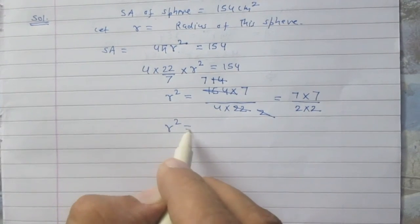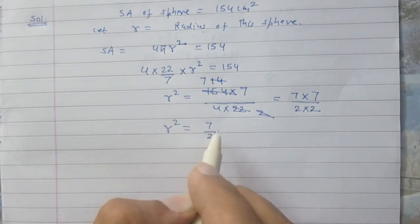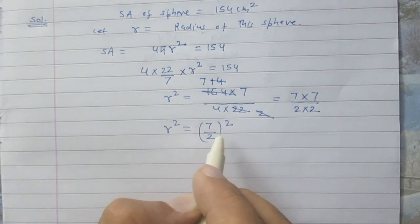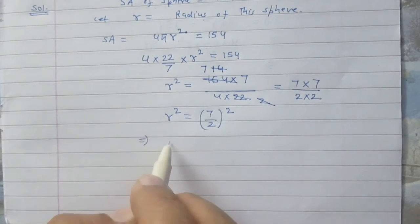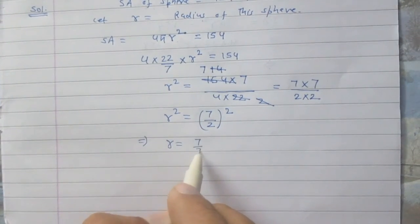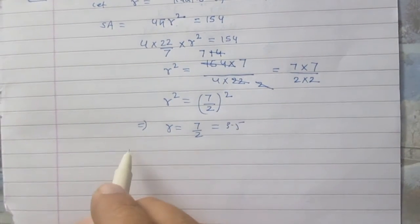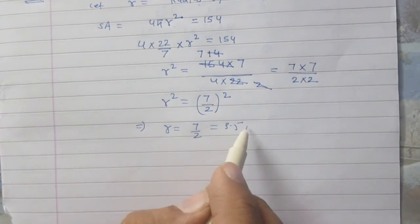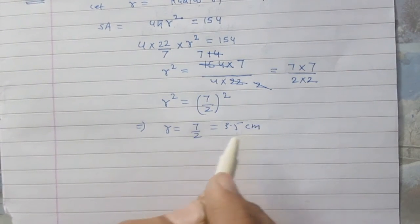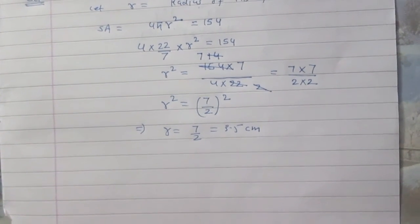So we will get r² is nothing but (7/2)². So we can say that value of r is 7/2, which is 3.5, so radius of the sphere is 3.5 cm.